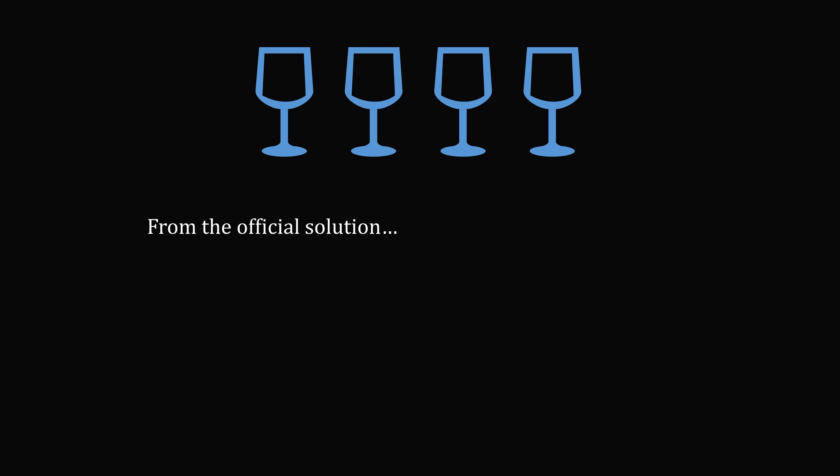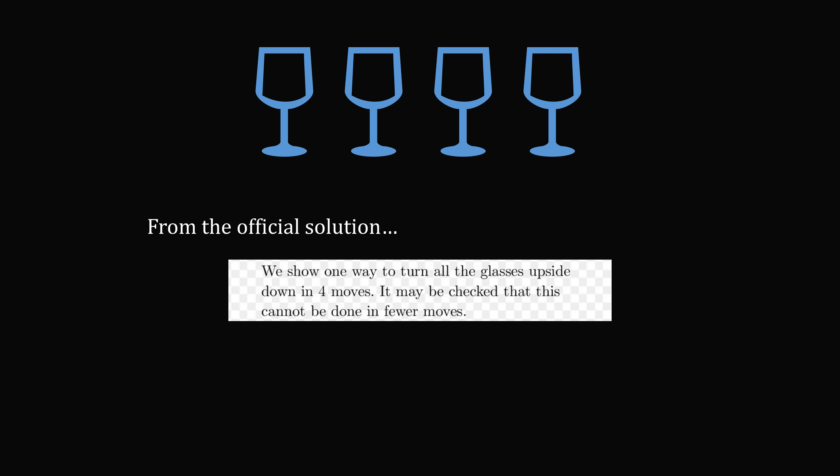We'll first start with the four glasses case. After I worked it out, I was very interested in how you would prove that it's the minimum number. So I looked at the official solution that was posted, and here's what it said: we show one way to turn all the glasses upside down in four moves. It may be checked that this cannot be done in fewer moves. Well, that's not very helpful at all. You'll see sentences like this in mathematical textbooks across your studies. So don't give up — I usually try to search online to see if anyone has provided the details to corroborate my answer.